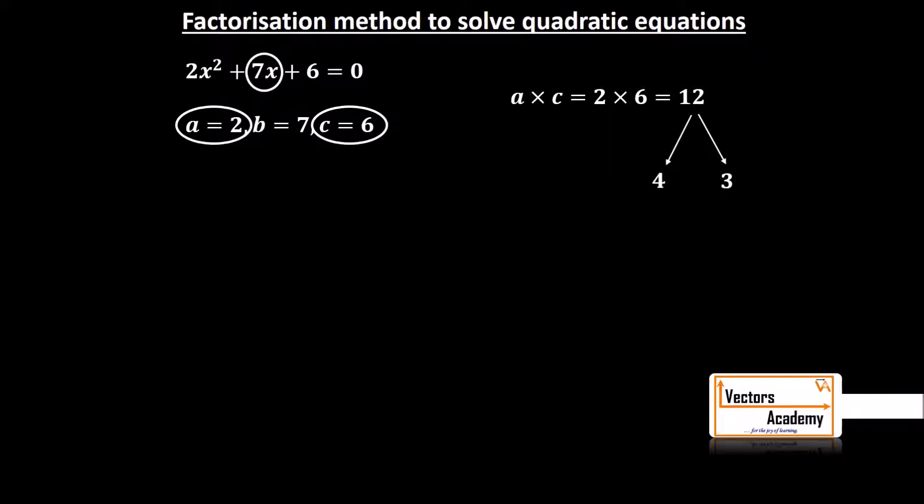So once we have found out the two factors 4 and 3, now we need to split the middle term that was 7x into two factors, that is 4x and 3x. So the equation will look like this: 2x² + 4x + 3x + 6 = 0.